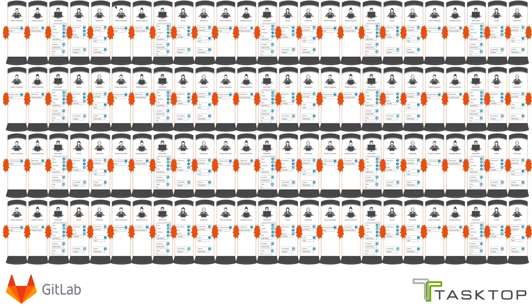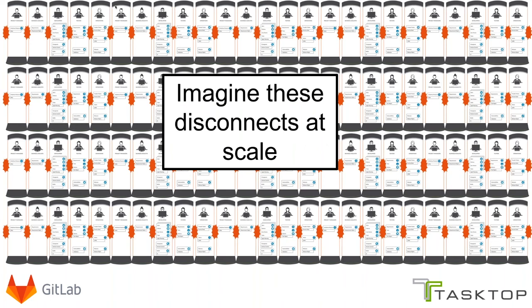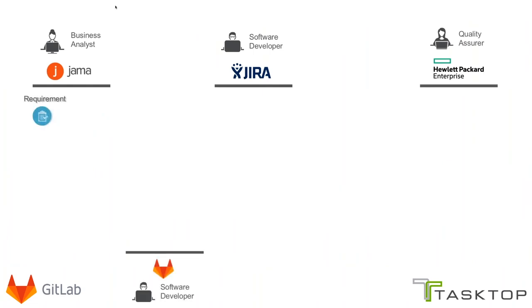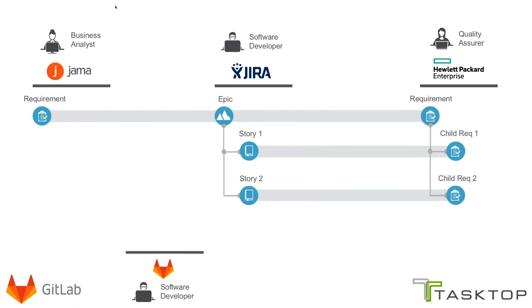This gets even scarier when you talk about software at scale. Many of the customers Tasktop works with are Fortune 500 or Fortune 100 companies with large-scale development shops — hundreds or thousands or even tens of thousands of people contributing. You can imagine how all of these disconnects affect things at that scale, with so many people and teams working on so many different product lines. What you want instead is a seamless flow of information between different systems to help people collaborate more effectively while still using the tool they prefer.